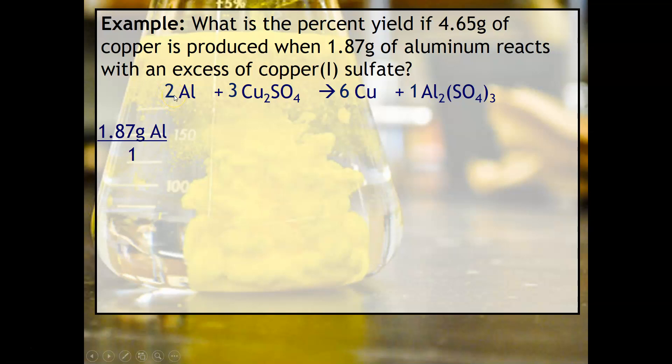We'll start with our 1.87 grams of aluminum. What we're going to do is, based off of the aluminum, calculate how much copper is produced from the stoichiometry, which is the theoretical value. We'll take the mass of aluminum, convert to moles, then use the mole ratio between aluminum and copper. The final step is what mass of copper is formed.